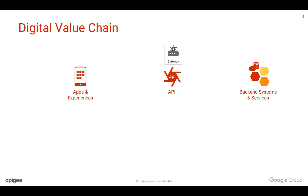You need to think about the other actors in the digital value chain. It can be API team members who are building these APIs and exposing them. You need to start thinking about API governance — which teams can control which APIs, which teams can deploy the APIs to production, and how you can control role-based access for tracing and debugging the APIs.